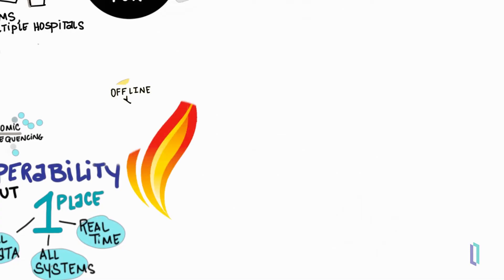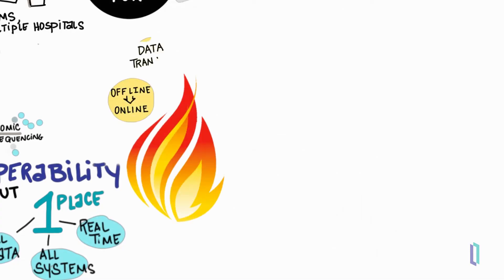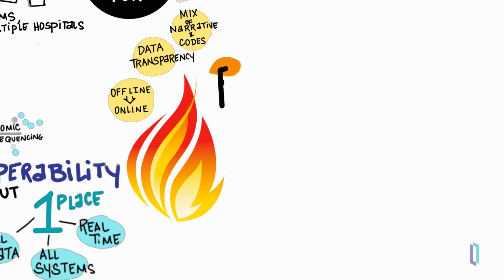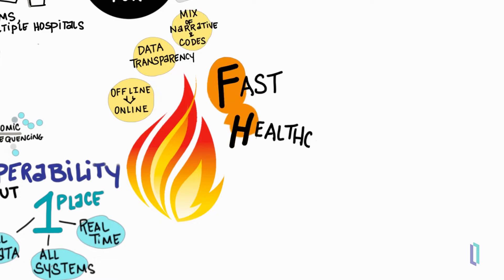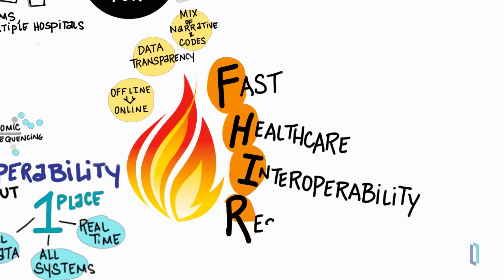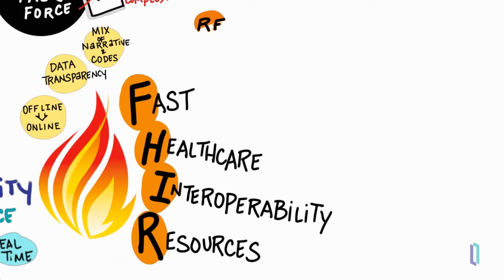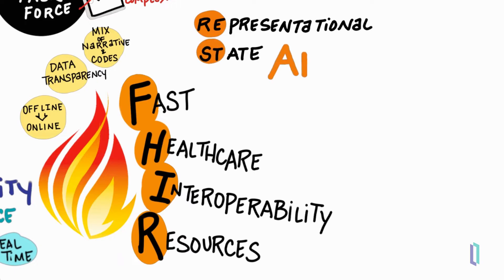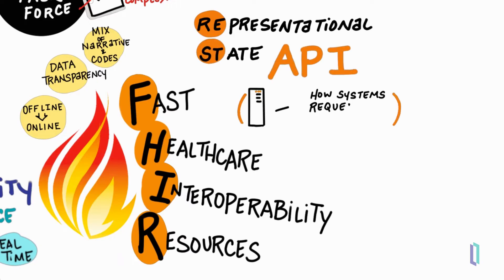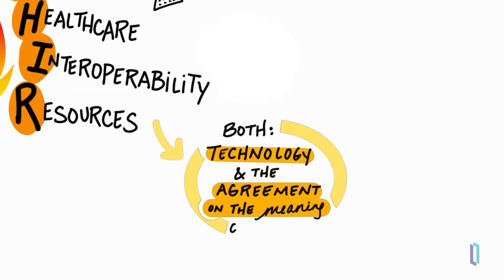FHIR was designed with key considerations in mind, including the need to move data from offline to online, as well as data transparency requirements. As a standard, FHIR can also handle both narrative and coded data. To put it simply, FHIR is a representational state or REST API. FHIR encompasses the specification for requesting and receiving data, as well as an agreement on the meaning of the data in healthcare.